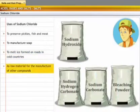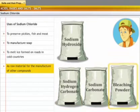Sodium chloride is used as raw material for the manufacturing of various other useful compounds like sodium hydroxide, sodium hydrogen carbonate, sodium carbonate and bleaching powder.